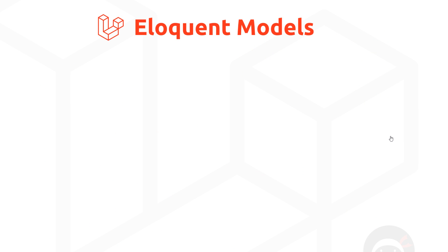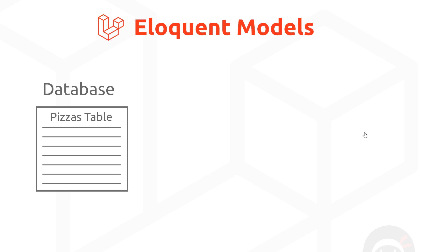So far we have created a database, hooked that up to our Laravel app, and used migrations to create tables in that database. Now we want to store data in those tables — for example, in the pizza table we want to store pizza records and interact with that data to get, save, and update it. We could use SQL commands manually, but in Laravel there's an easier way: using what's known as Eloquent models.